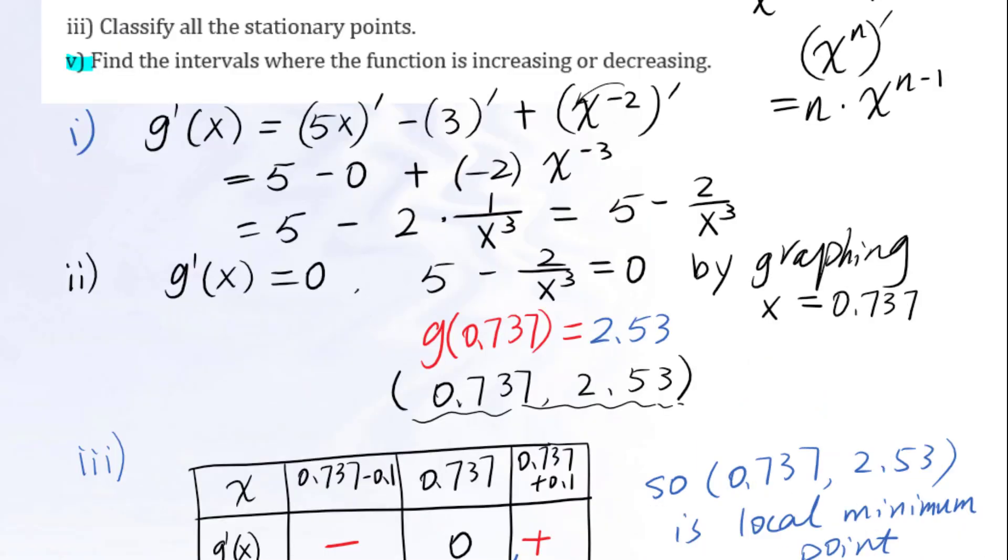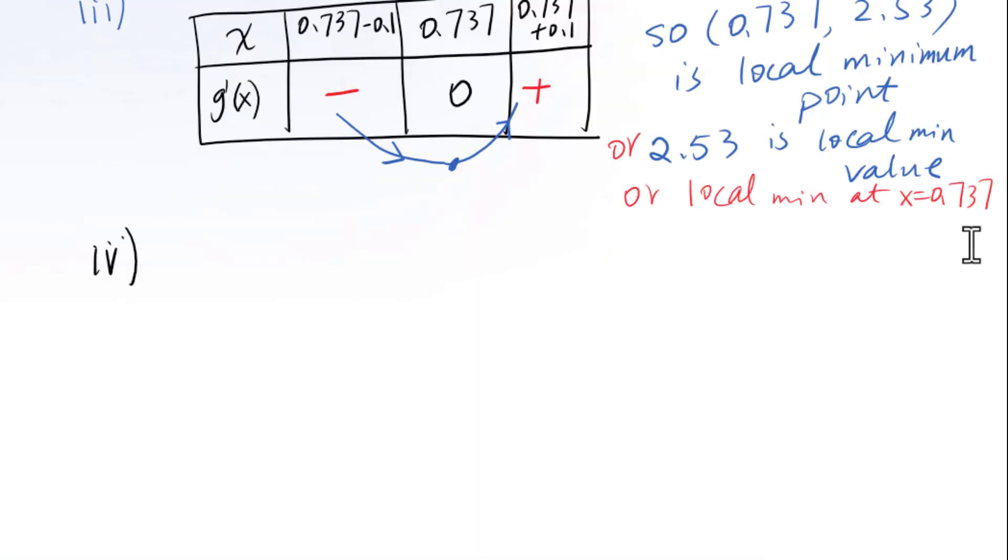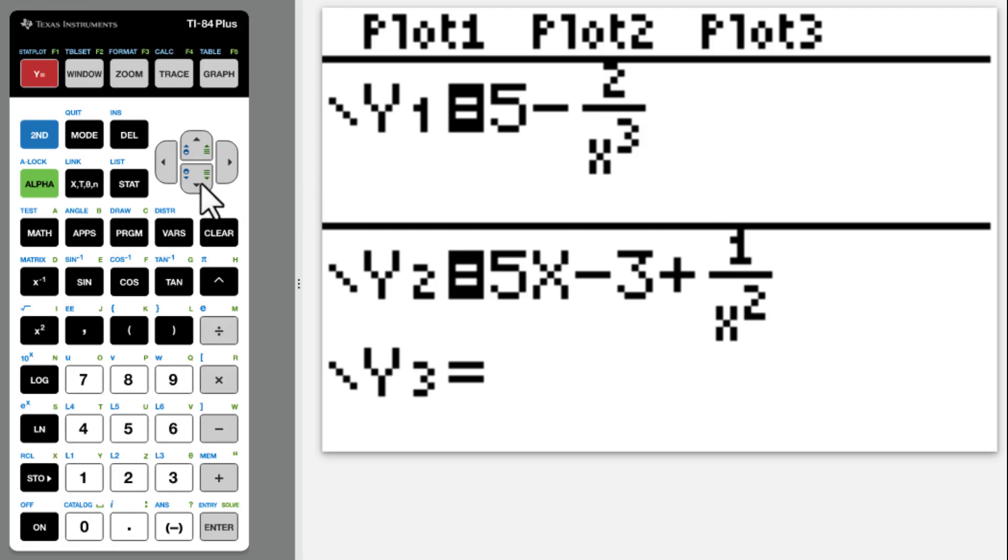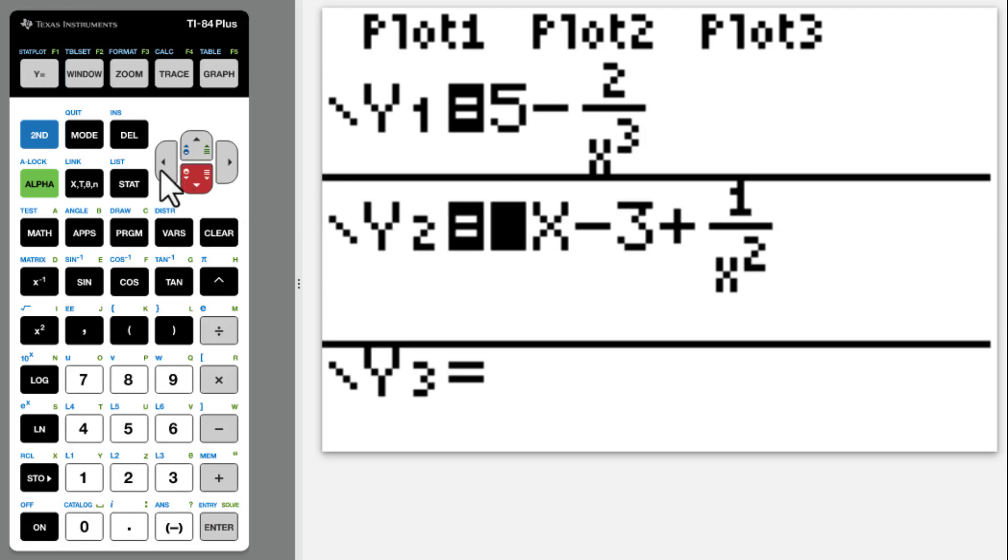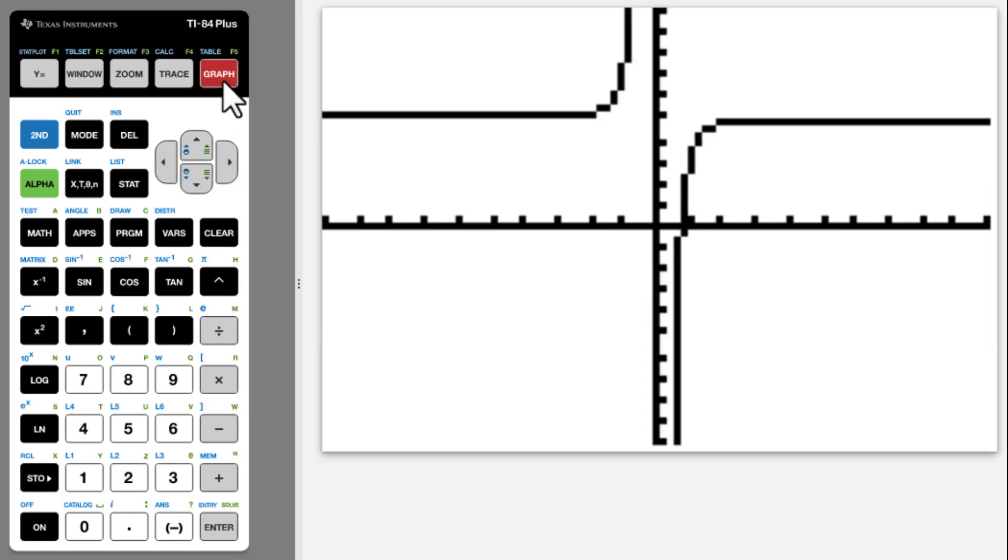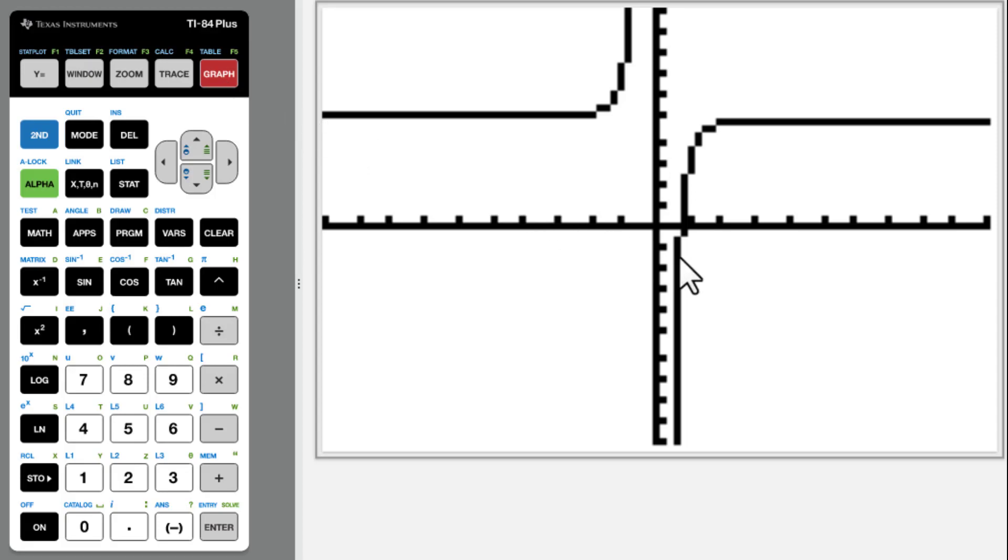Let's go to part five. Find the intervals where the function is increasing or decreasing. We will go to derivative function. Remember y1 is the derivative function, y2 is the original function. So unhighlight this y2 graph. Above x-axis is positive. Below x-axis is negative.